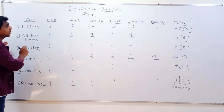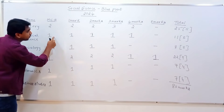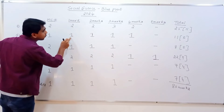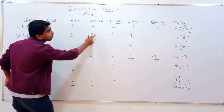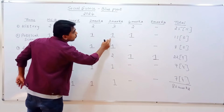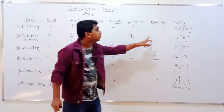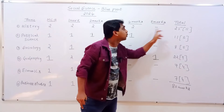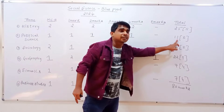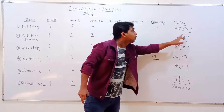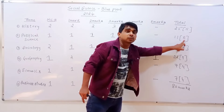Political Science has one multiple choice question. One mark is one, two mark is one, three mark is one, four mark is one, five mark is one question. Total mark is 11 marks. Yes questions is 5 questions.